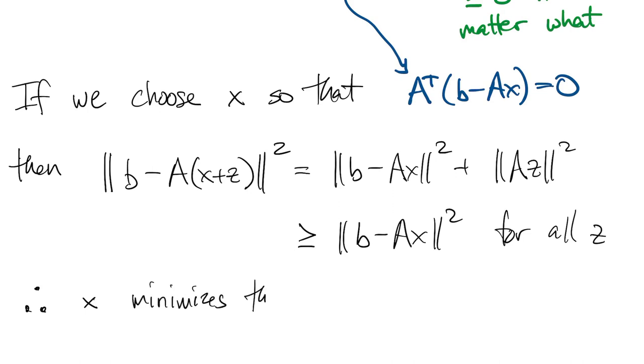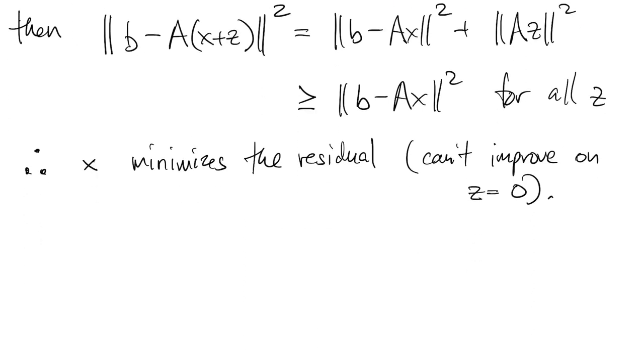So our conclusion is, if we want to make that thing on the left as small as possible, choose z equal to zero. You can't do any better than that. That means that x is the thing that actually minimizes the residual.